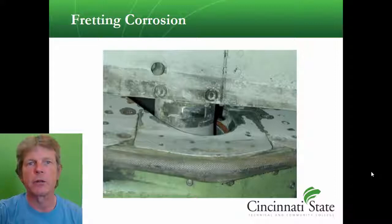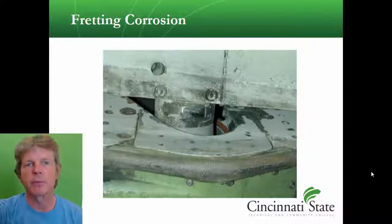The wings, tails, and engine mounts all flex in flight, and this works the metal back and forth. Add that with some sort of electrolyte and oxygen, and you can get corrosion.